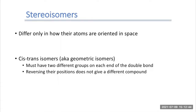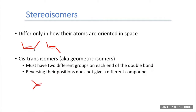Finally, a quick look at stereoisomers. Stereoisomers differ in how their atoms are oriented in space. We've already seen this with cis and trans — the only difference is a methyl group pointing up versus down, but everything else is the same. Cis-trans isomers, or geometric isomers, require two different groups on each end of the double bond. Reversing their position must give a different compound. If you have the same group on each carbon, there are no cis-trans isomers.